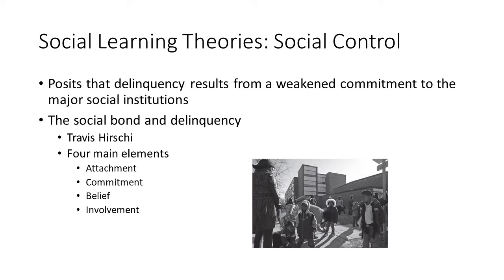Sociologist Travis Hirschi argued that the most important question is not why do criminals commit crime, but rather why do the rest of us not do it? Social control theory offers this explanation through social bonds. When an individual's bonds to society are strong, they prevent or limit crime and deviant behavior. When bonds are weak, they increase the probability of deviance. Weak or broken bonds do not cause delinquency, but rather allow it to happen.